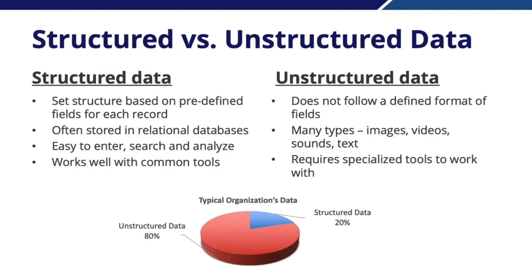We commonly break data down into two primary types: structured versus unstructured data. Structured data follows a set structure based on predefined fields. We have various records, and each record includes a number of predefined fields. For those familiar with spreadsheet programs like Excel, structured data has rows as records and columns as predefined fields. It's often stored in relational databases, and it's easy to enter, organize, search, and analyze. It also works well with commonly used tools across a variety of roles in an organization.